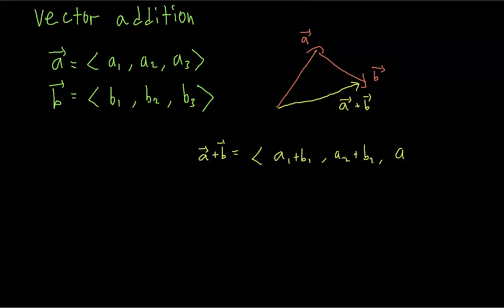Geometrically, to add two vectors, you just put B, the second one, at the end of the first one, and then you draw a new vector from the original starting point to the end of the second vector.